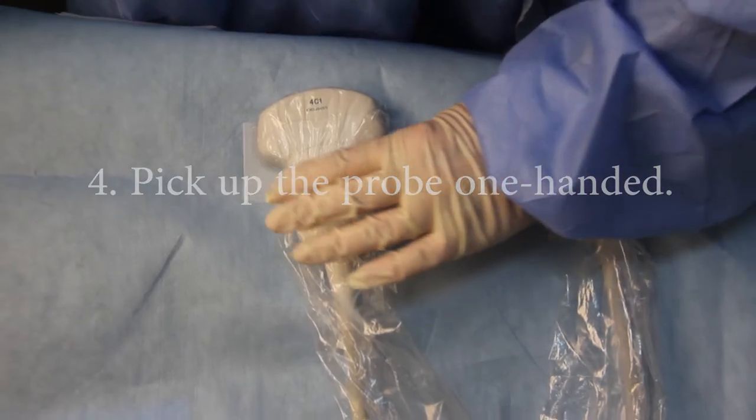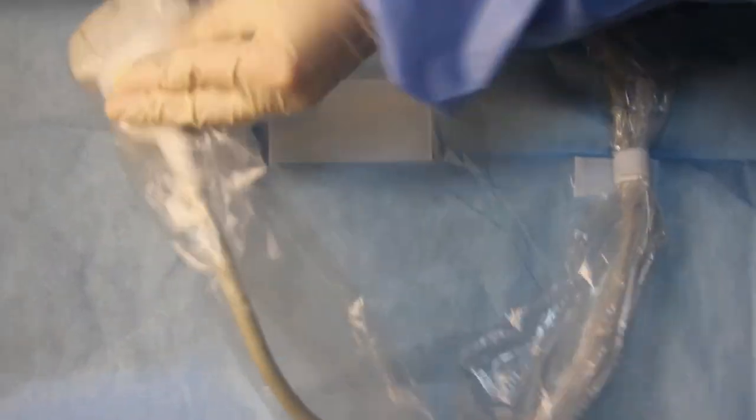4. Learn to pick the probe up one-handed by slipping your finger between the two pieces of Velcro.